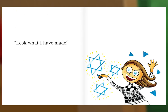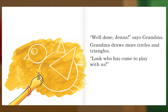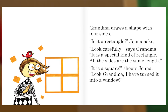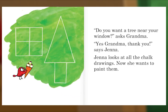'Look at what I have drawn,' says grandma. 'Well done,' Jenna says. Grandma draws more circles and triangles. Look who has come to play with us! Grandma draws a shape with four sides. 'Is it a rectangle?' Jenna asks. 'Look carefully,' says grandma. 'It is a special kind of rectangle — all the sides are the same length.' 'It is a square!' shouts Jenna. 'Look grandma, I have turned it into a window!' 'Do you want a tree near your window?' asks grandma.